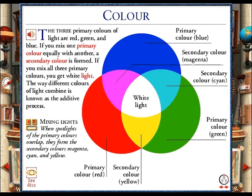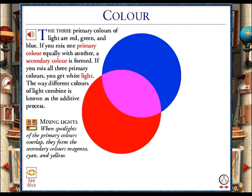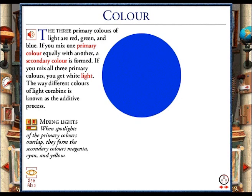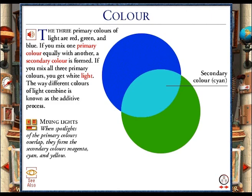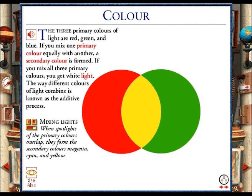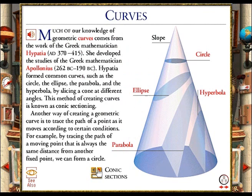You can see how secondary colors are created when spotlights of the primary colors overlap and become mixed. When you mix red light with an equal amount of blue light, you create a secondary color called magenta. When you mix blue light with an equal amount of green light, you create a secondary color called cyan. More surprisingly, when you mix red light equally with green light, the secondary color you create is yellow. If you mix all three primary colors in equal amounts, you create pure white light.